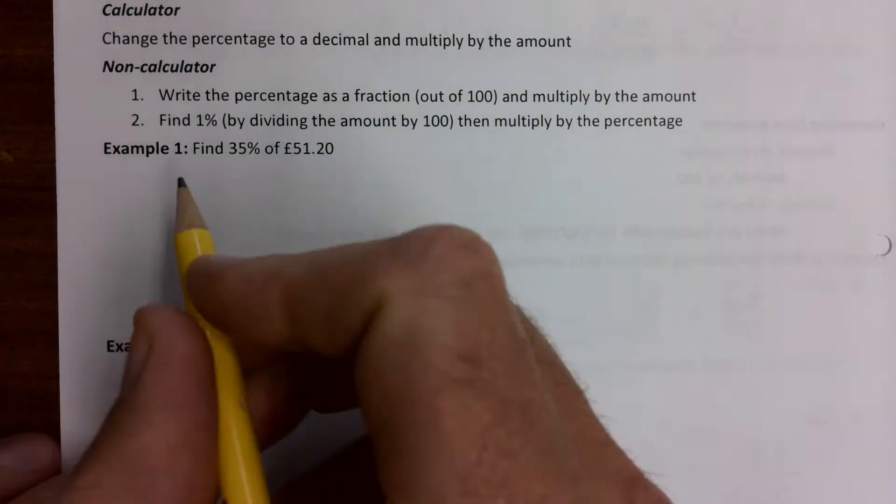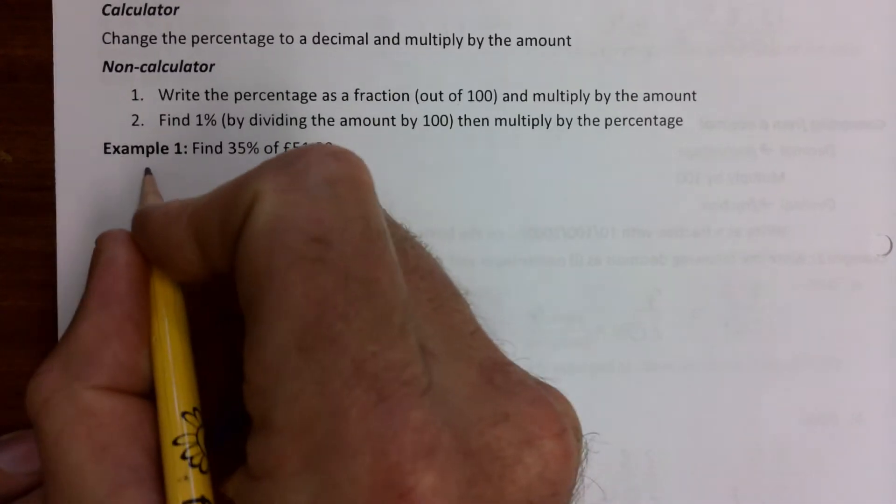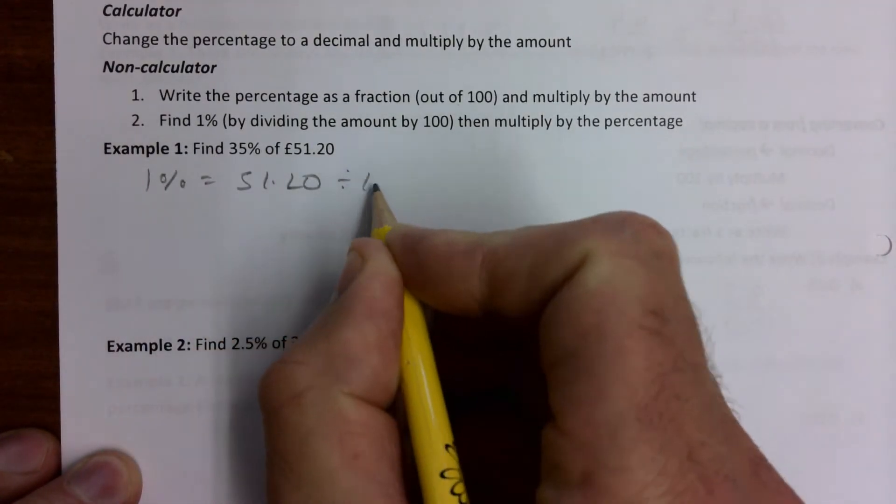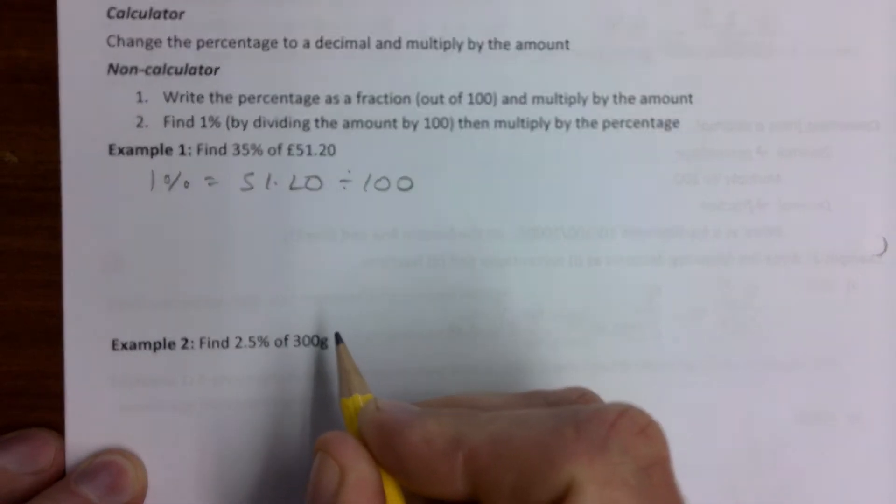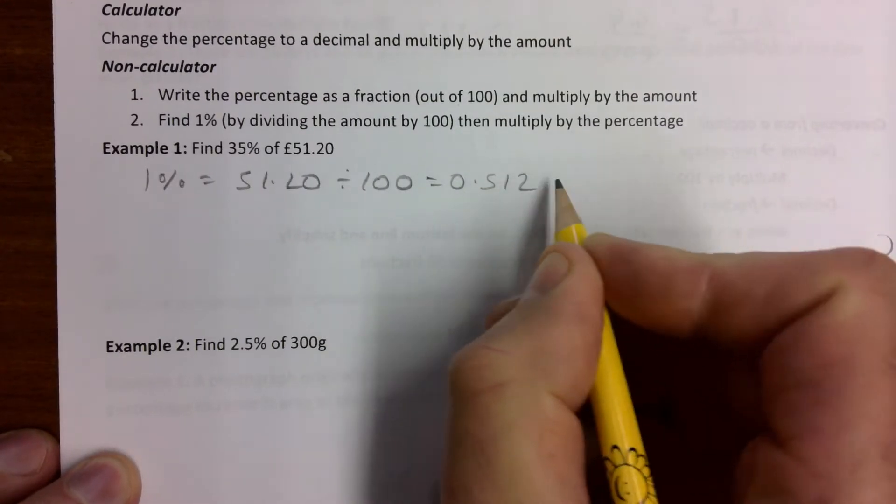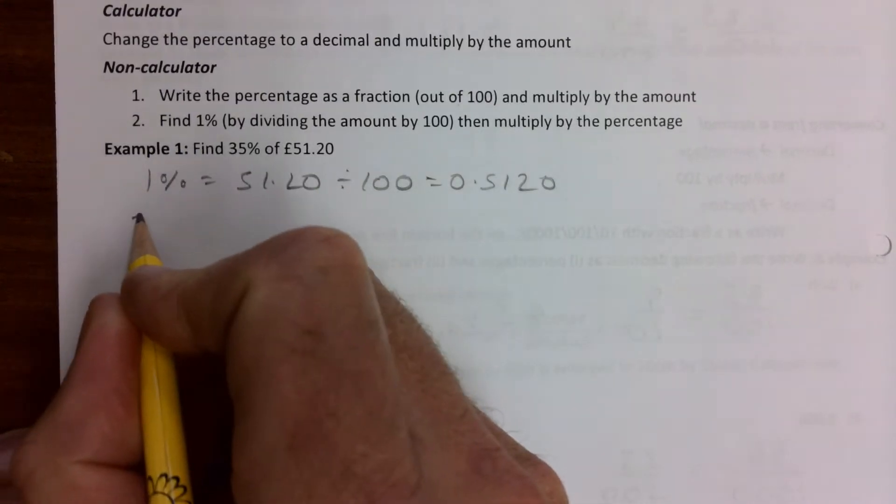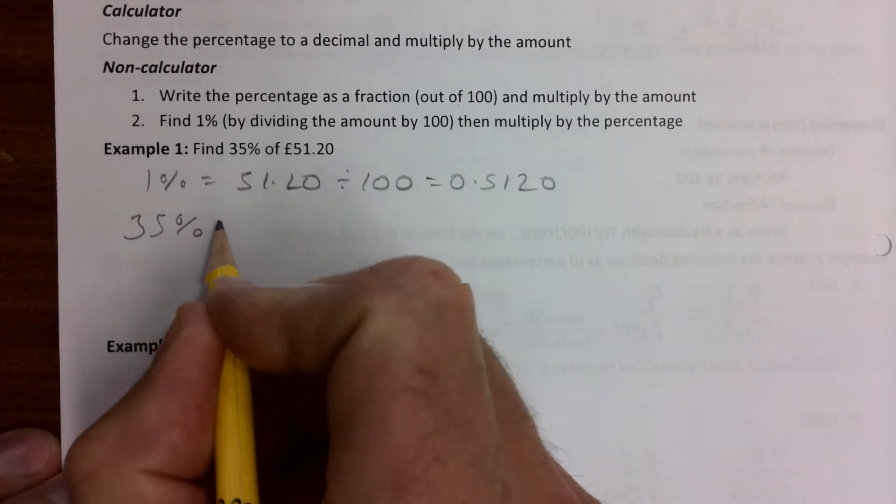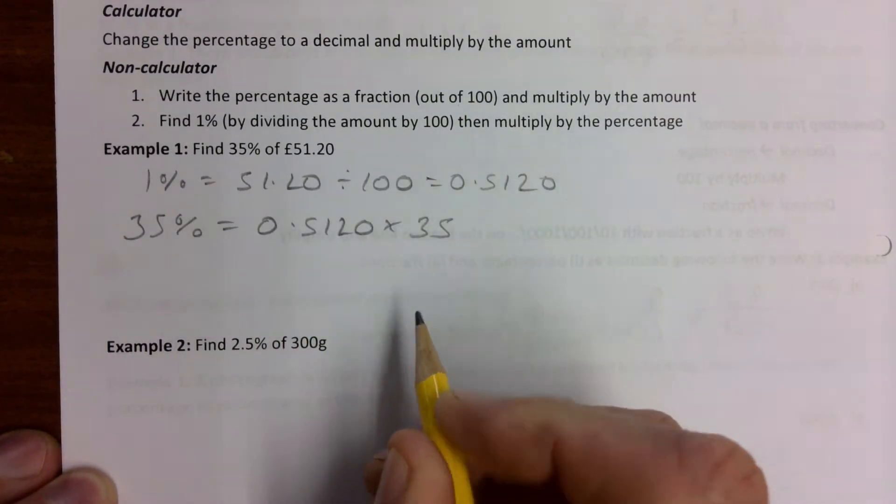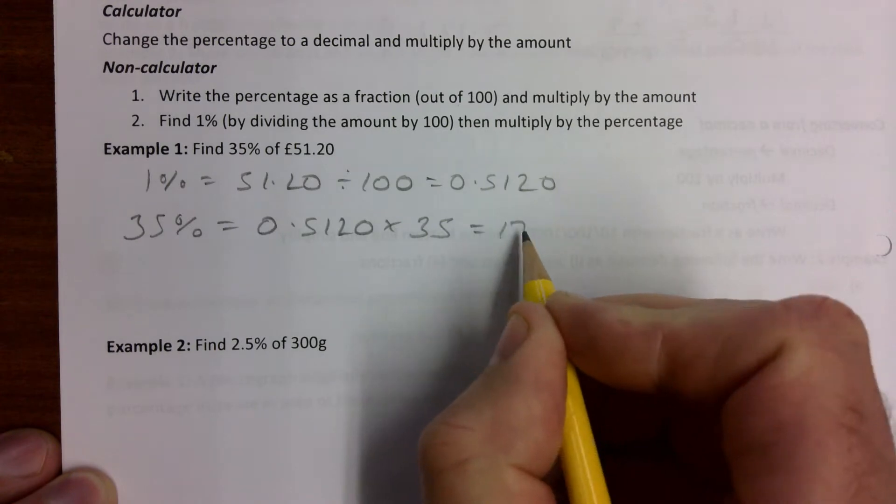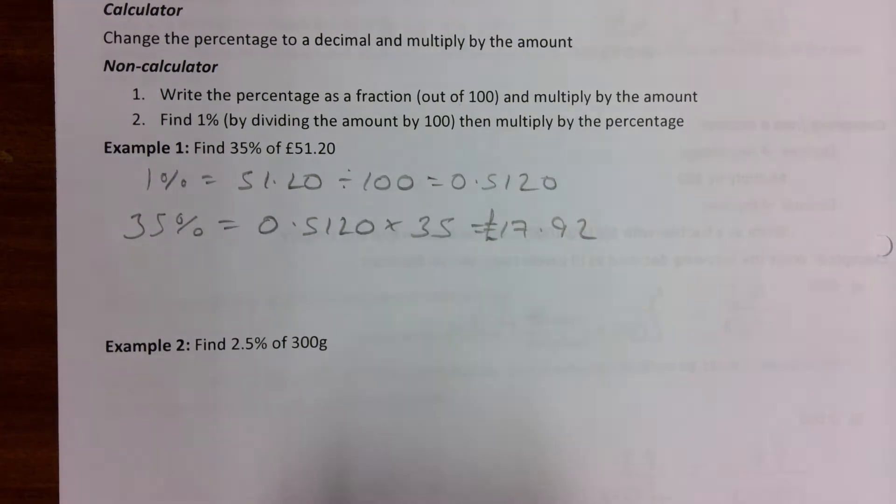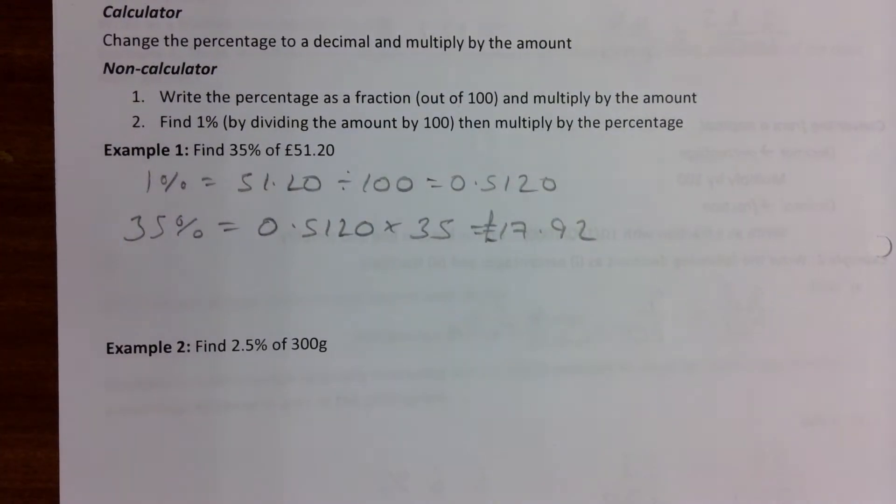My fallback method for any of these is to find 1%. So how do you find 1%? It's going to be £51.20 divided by 100. If you divide by 100 you get 0.5120. Then we want 35%, so it's 0.5120 times by 35 and that will give you £17.92. Because we are in pounds, we leave it there just like that.